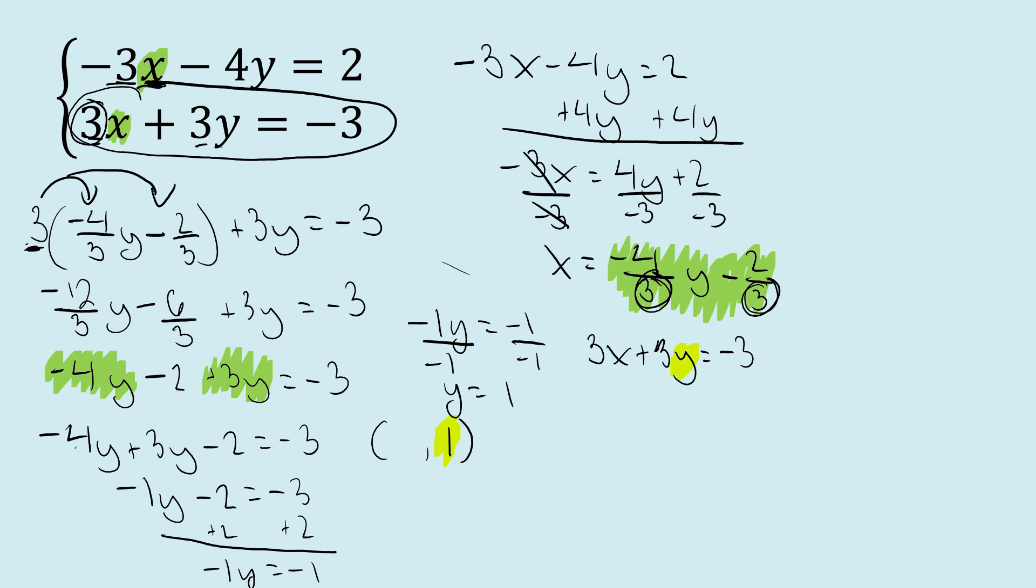So that 1, we're going to substitute in for y here. So I have 3x plus 3 times 1 equals negative 3. I get 3x plus 3 equals negative 3.